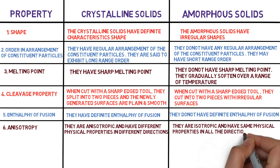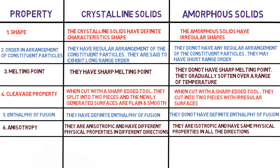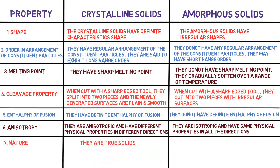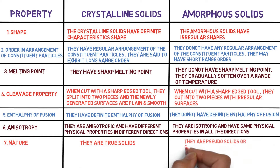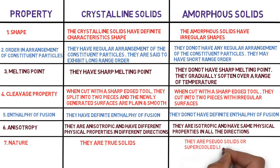The seventh property is nature. Crystalline solids are true solids, whereas amorphous solids are pseudo solids or super cooled liquids — they have a tendency to flow.